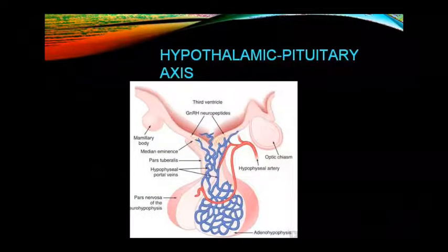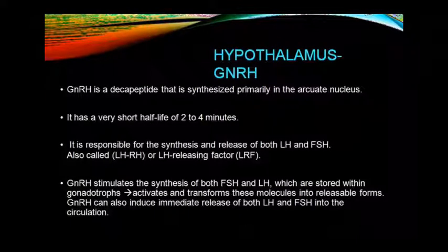Now looking at the hypothalamic and pituitary axis: the third ventricle, gonadotropin-releasing hormone (GnRH) — a neuropeptide — is shown along with the mammillary body, optic chiasma, and median eminence. The pars tuberalis, hypophyseal artery, and hypophyseal portal vein going into the anterior pituitary are shown, along with the pars nervosa (neurohypophysis) and the adenohypophysis. GnRH is a decapeptide, primarily formed in the arcuate nucleus, with a short half-life of 2–4 minutes.